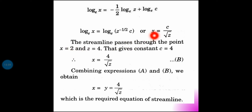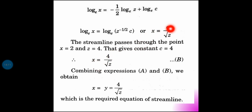Substituting the values of x and z from the passing point r = 2i + 2j + 4k, we find that x equals 4 divided by root z. Comparing all equations, the final result is x = y = 4/√z. This is the equation of the streamline passing through the given point.